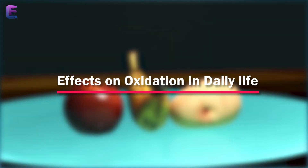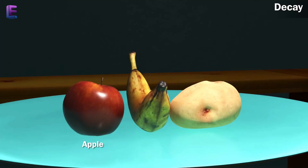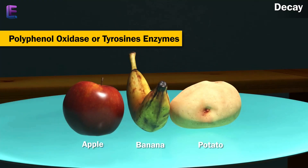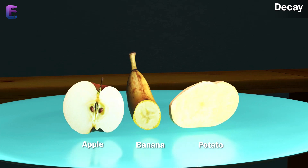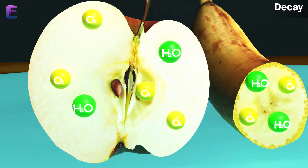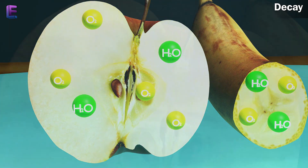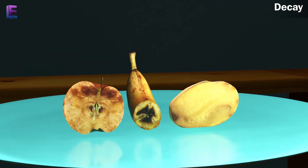Effects of oxidation in daily life — Decay. Apples, bananas, potatoes, etc. contain polyphenol oxidase or tyrosine enzymes. These enzymes react with oxygen. When fruits like apples are cut, the enzymes and chemicals in them react with the oxygen in the air. This is why the top layer turns brown.